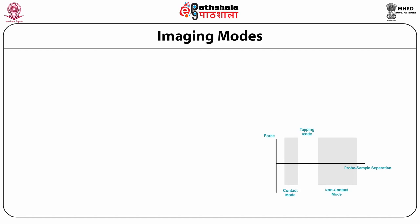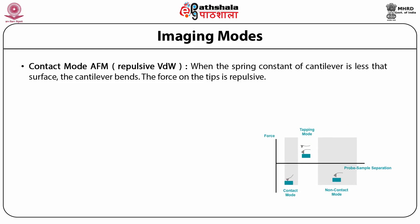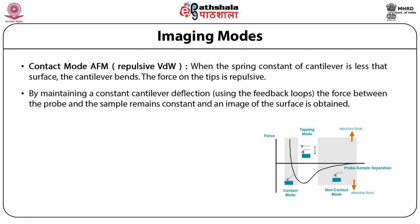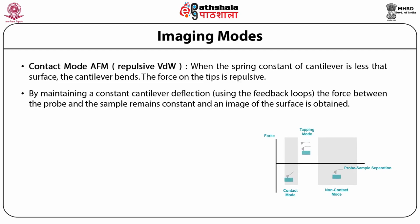There are three imaging modes: contact mode, non-contact mode, and tapping mode. In contact mode AFM, repulsive van der Waals force is used. When the spring constant of the cantilever is less than that of the surface, the cantilever bends and the force on the tip is repulsive. By maintaining a constant cantilever deflection using the feedback loop, the force between the probe and the sample remains constant and an image of the surface is obtained.